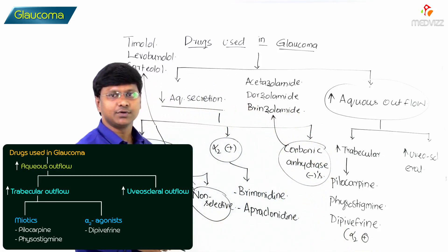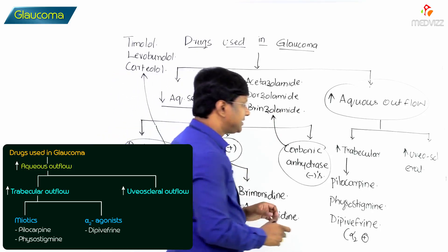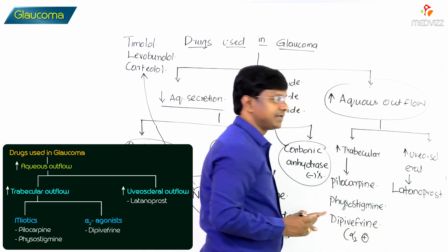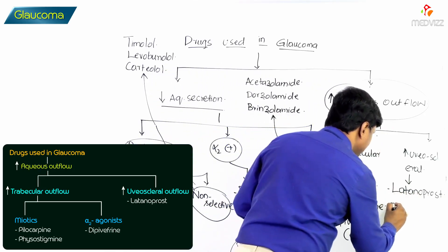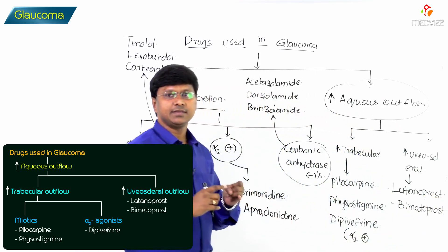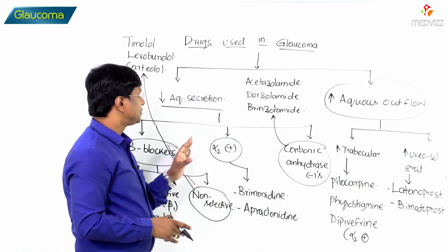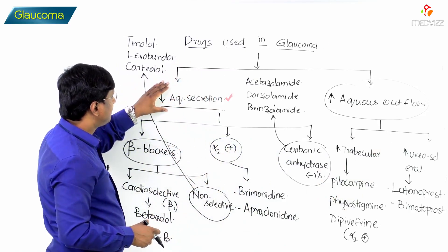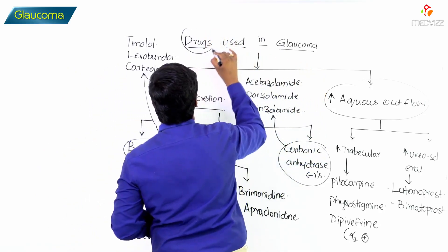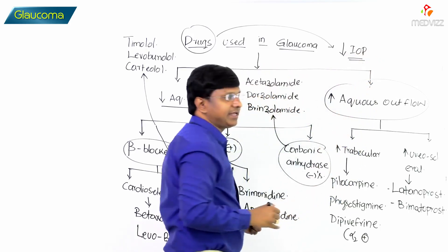Dipivefrin is an alpha-2 agonist. The group of drugs which will increase the uvioscleral outflow and thereby increase the aqueous outflow are latanoprost and bimatoprost. So the drugs used in the treatment of glaucoma are those which reduce aqueous humor production and those which increase aqueous outflow, and thereby these drugs decrease the intraocular pressure and prevent optic nerve damage.